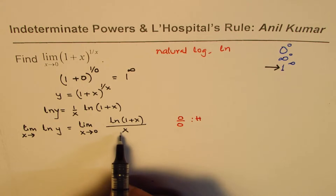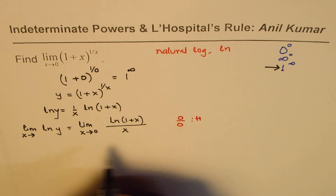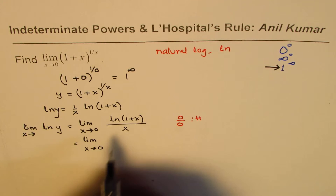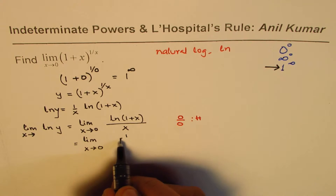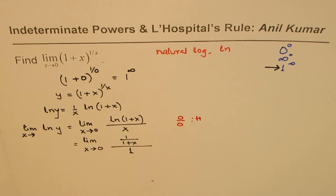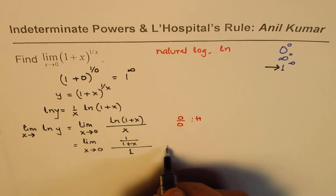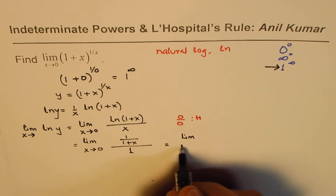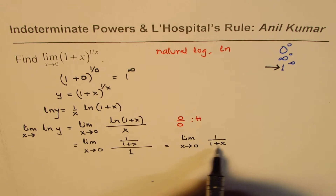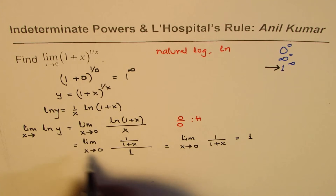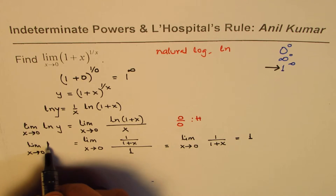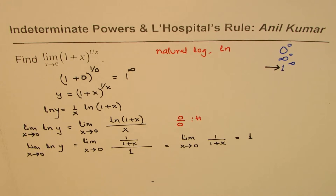L'Hôpital's rule states that the limit of this function equals the limit of the derivatives of the numerator and denominator. The derivative of ln(1 + x) is one over (1 + x), and the derivative of x is one. So we get the limit as x approaches zero of one over (1 + x). Substituting zero gives us one. So the limit of ln y as x approaches zero equals one.